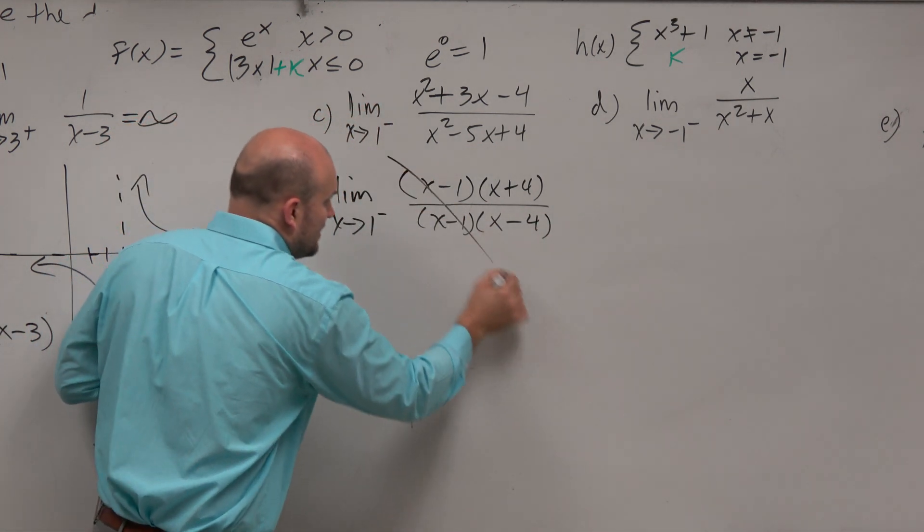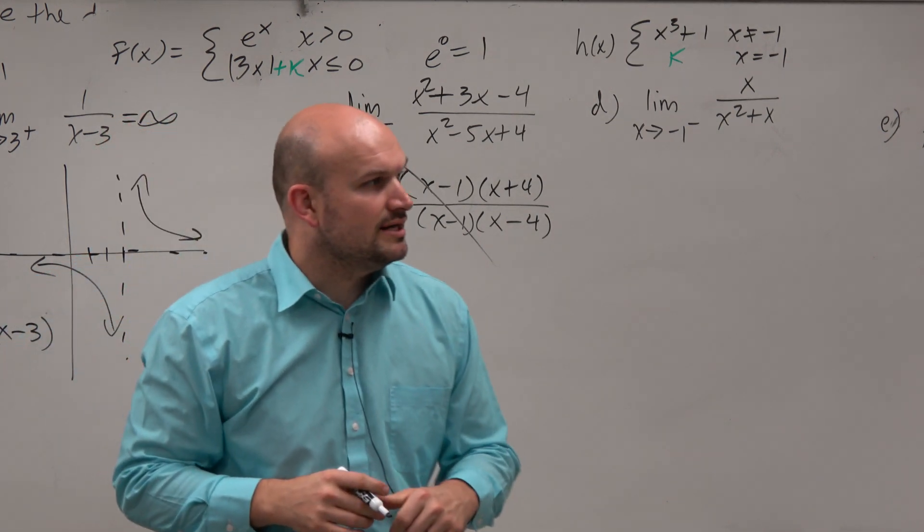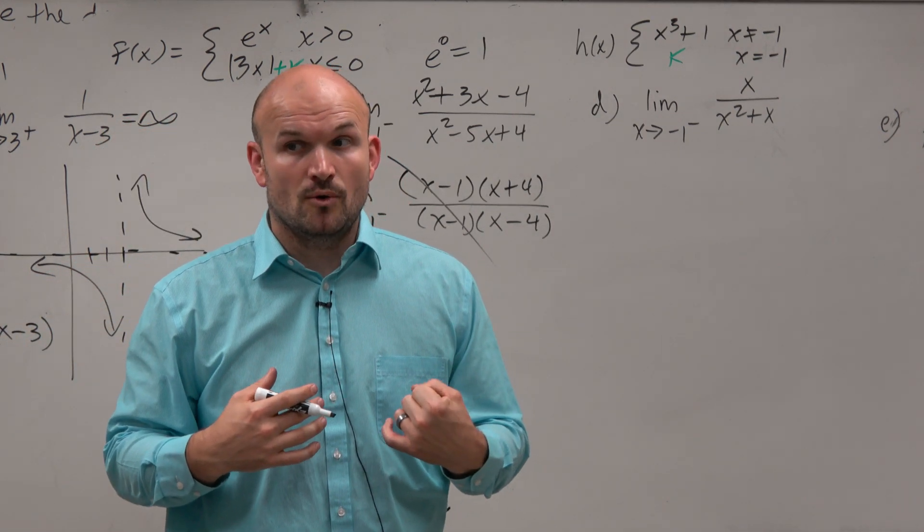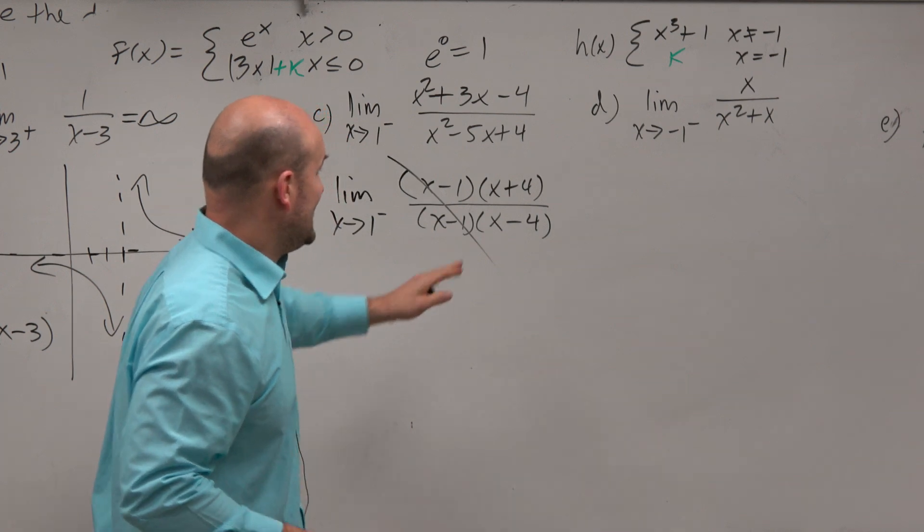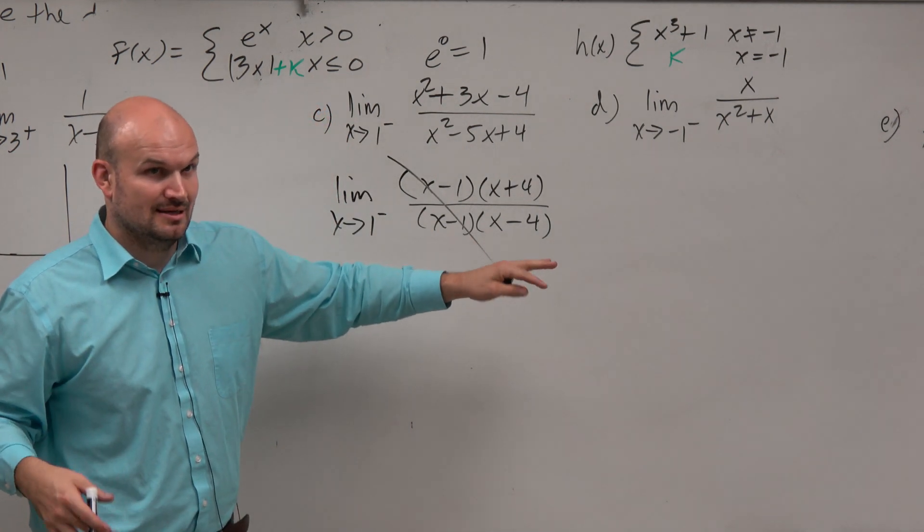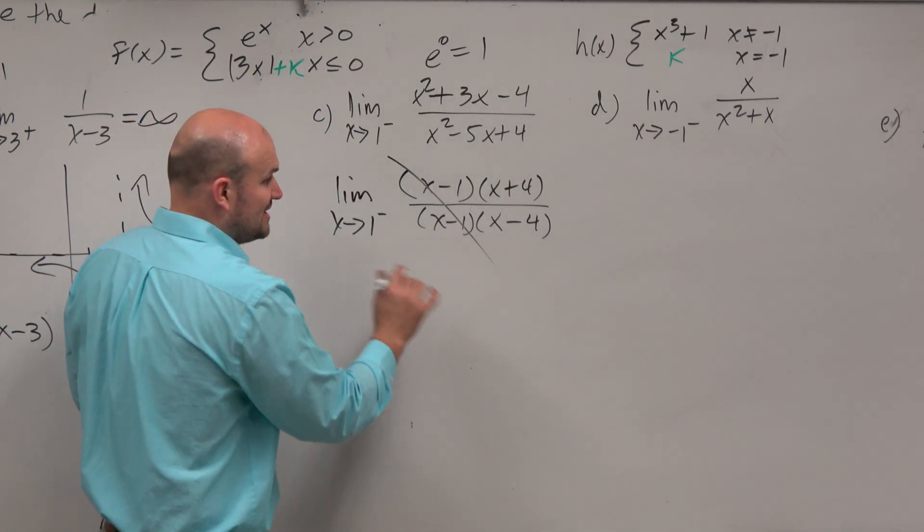So therefore, I see at x minus 1 or x equals 1, there is a hole. And when x is equal to 4, there is an asymptote. Now, I have no idea what this graph looks like.